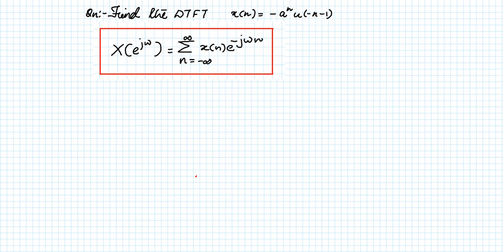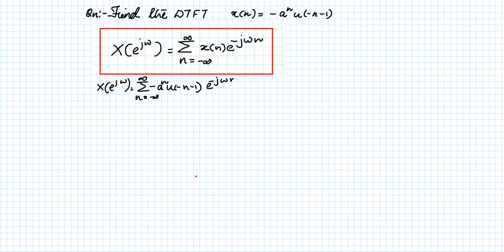Now we can substitute x of n, so we write X of e raised to j omega equals sigma, n equals minus infinity to infinity, of minus a raised to n, u of minus n minus 1, into e raised to minus j omega n. Now you can see that there is a non-causal signal, which is a modified version of a step function, u of minus n minus 1.